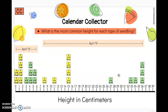Using that same thinking, what's the most common corn seedling height, just for today? Show a connection if you're thinking 15 centimeters. Four of our six measurements for corn are on the 15 centimeter measurement — they're all stacked up there.